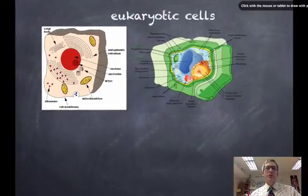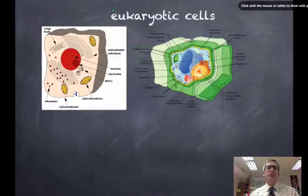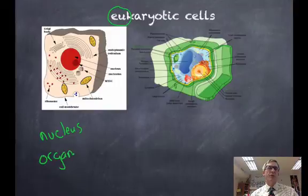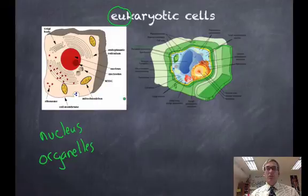When we take a look at eukaryotic cells, here's a little trick that might help you. Eukaryotic U rhymes with nucleus. Eukaryotic cells have a nucleus, and they have membrane-bound organelles. Eukaryotic cells are much larger.